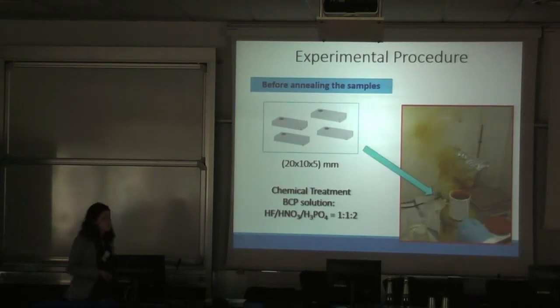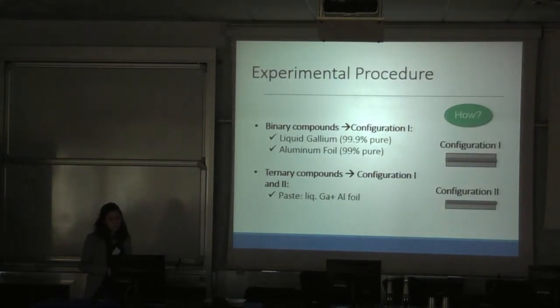Before annealing the samples, we chemically treat with BCP solution in order to prepare the surface. How we perform this annealing? We start with the first configuration, that means niobium, then gallium or aluminum, and then niobium. And the second configuration, we have one extract of gallium or aluminum on niobium substrate.